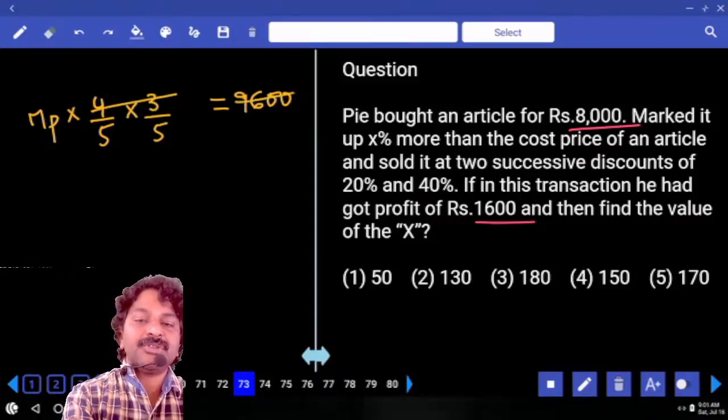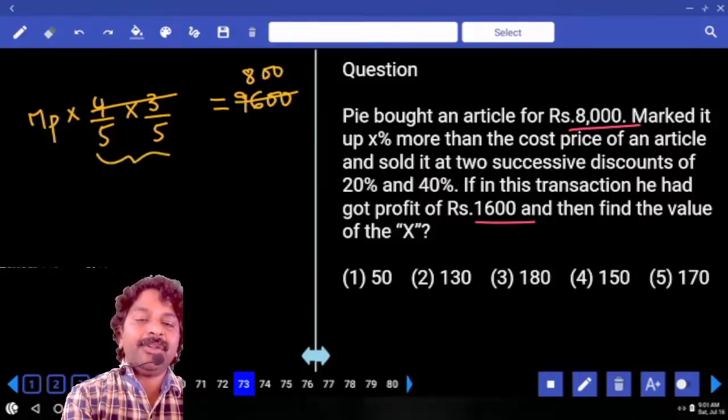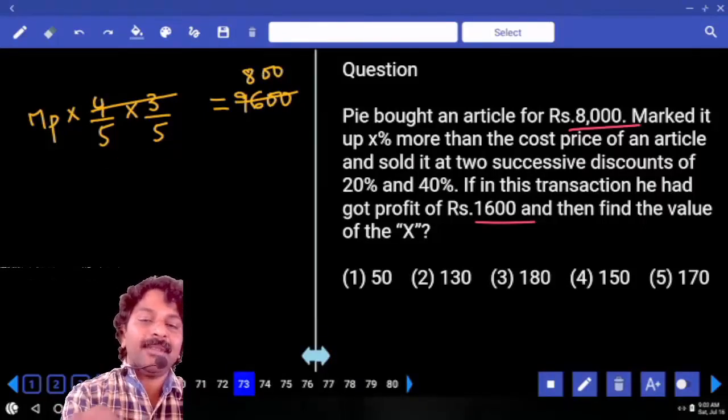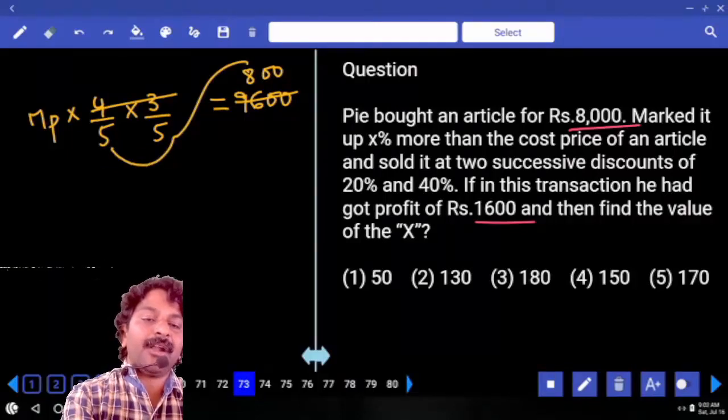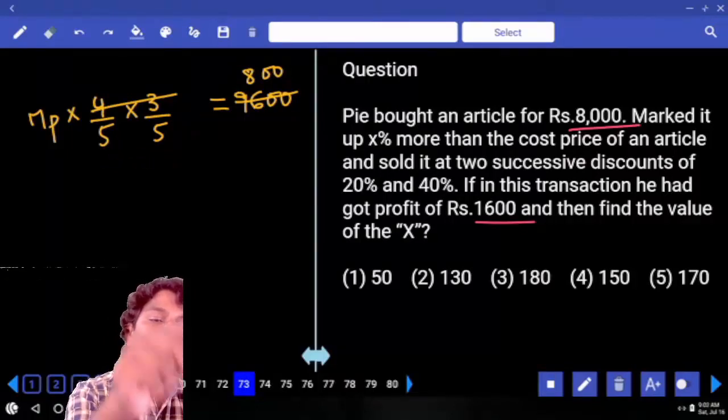4 into 3, that's 12. MP times 12. 5 into 5 goes to the right hand side. 8 into 5? 40 into 5?